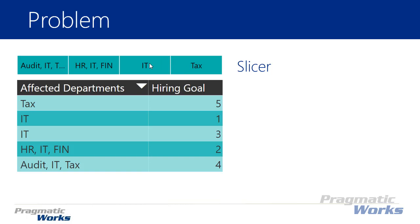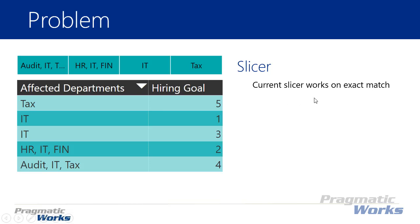If the end user wanted to return all rows where the row was equal to IT department, they would have to select multiple items from the slicer. This is a very small subset of the data, and in his situation he had multiple combinations of departments. It was unreasonable to select multiple items in a slicer to find all the different versions for the IT department. The problem with this slicer is that it only works with an exact match.